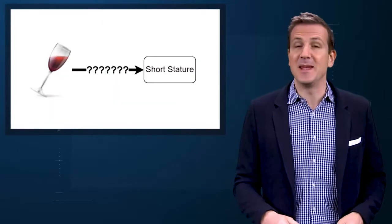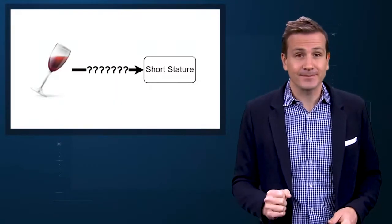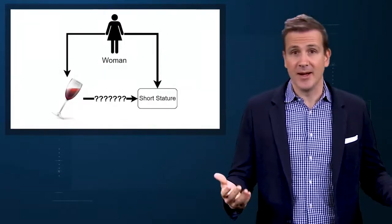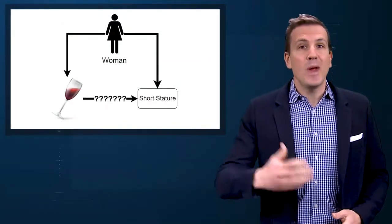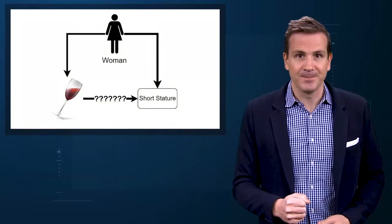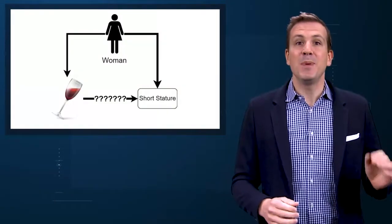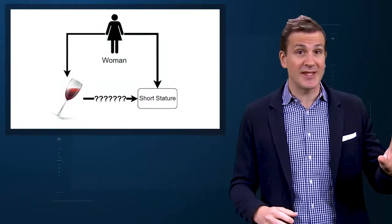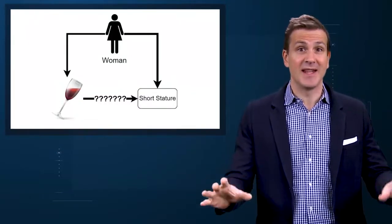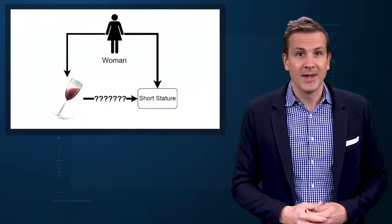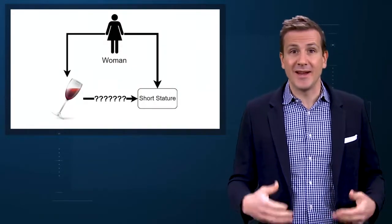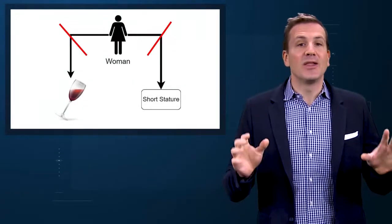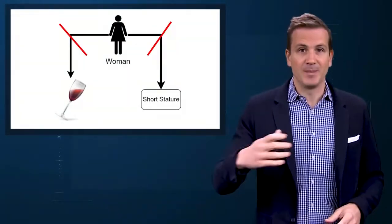Now, you're probably way ahead of me. There is a major confounder here. Women drink more rosé than men, and women are shorter than men, on average. In this case, women confound the rosé-height relationship. Here's the critical thing to note: being a woman is associated with both the exposure of interest and the outcome of interest. That is the definition of a confounder. Once we've identified a confounder, we can adjust for it – adjusting cuts causal lines like this, allowing the true relationship between exposure and outcome to emerge.